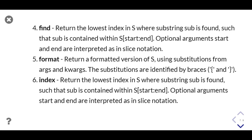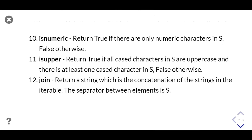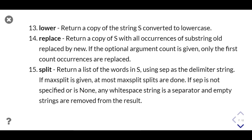The index method is similar to find. isalnum checks if all characters in the string are alphabets or digits. isdigit checks if all characters are digits. islower checks if all characters are in lowercase. isnumeric checks if all characters are numeric. isupper checks if all characters are uppercase. The join method is used to concatenate strings from an iterable. The lower method converts all characters to lowercase.